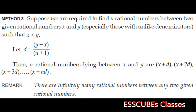Let us now focus on method number 3. In the previous method we had like denominators, but this method handles unlike denominators. Suppose we have two numbers x and y where y is greater than x. We find the difference between the two numbers — y minus x — and divide by n plus 1, where n is the number of terms asked to find. The n rational numbers equally spaced between x and y are: x plus d, x plus 2d, x plus 3d, and so on. There are infinitely many rational numbers between any two given rational numbers.